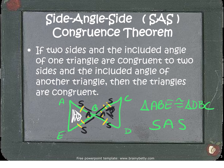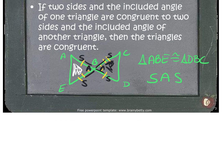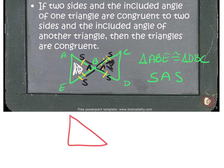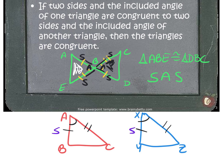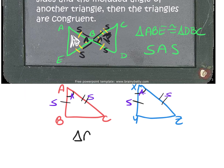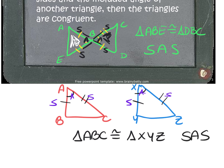Sometimes your figures may not be touching — they could be drawn separately or overlapping. For example, with two separate triangles ABC and XYZ, we could have congruency marks: AB congruent to XY, AC congruent to XZ, and then the included angle at the top. You can see that it's a side, then the included angle, then another side — so we state triangle ABC is congruent to triangle XYZ by side angle side.